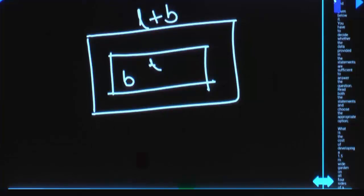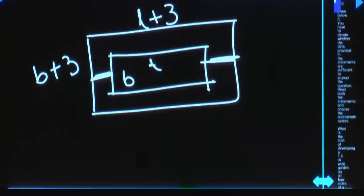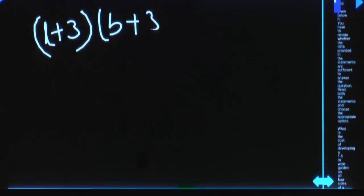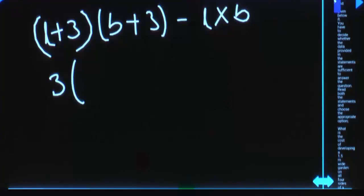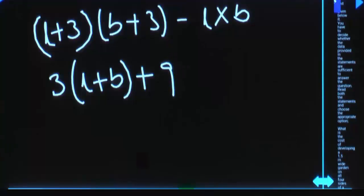If inner rectangle length is L and breadth is B, outer rectangle length becomes L plus 3 and breadth becomes B plus 3. Because the width of the road is 1.5 — lengthwise you add 1.5 here and 1.5 there, total 3. Similarly for breadth: 1.5 plus 1.5 equals 3. Path area equals outer rectangle area minus inner rectangle area L into B. When you expand this, LB cancels out. 3L and 3B remain, so that becomes 3 into L plus B plus 9.